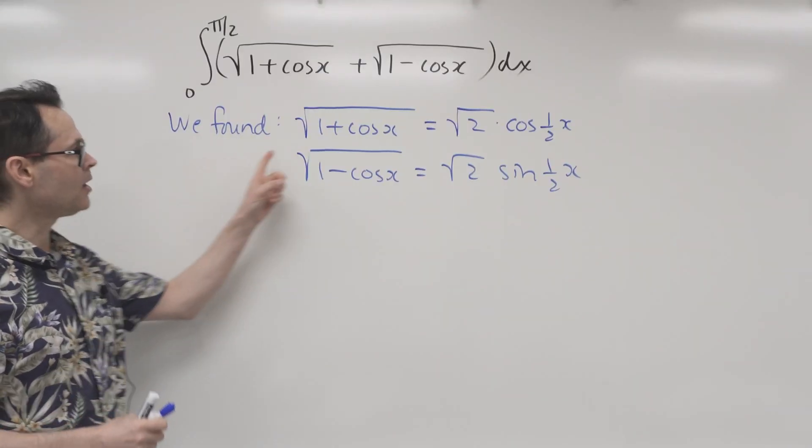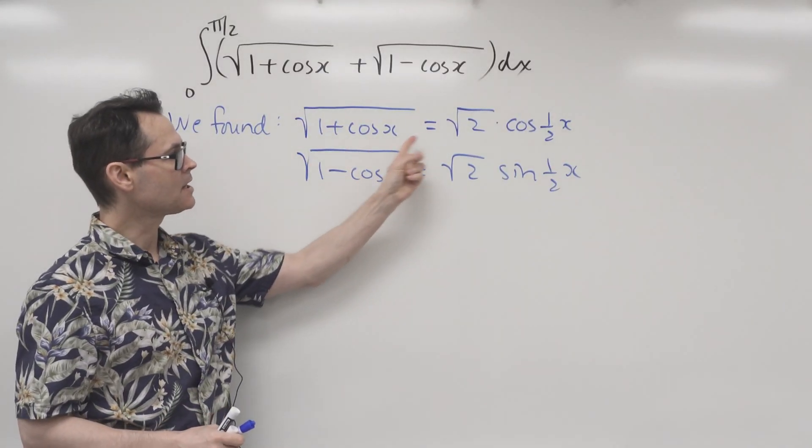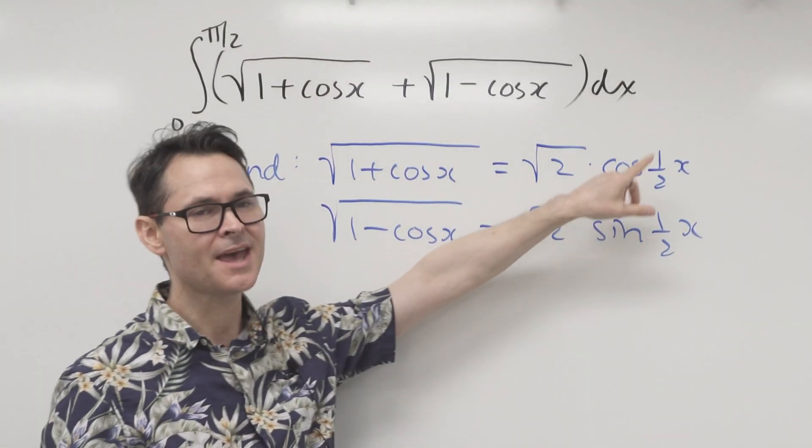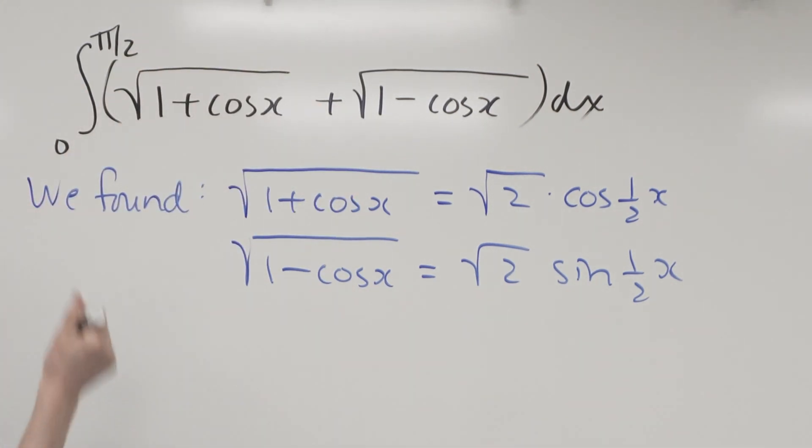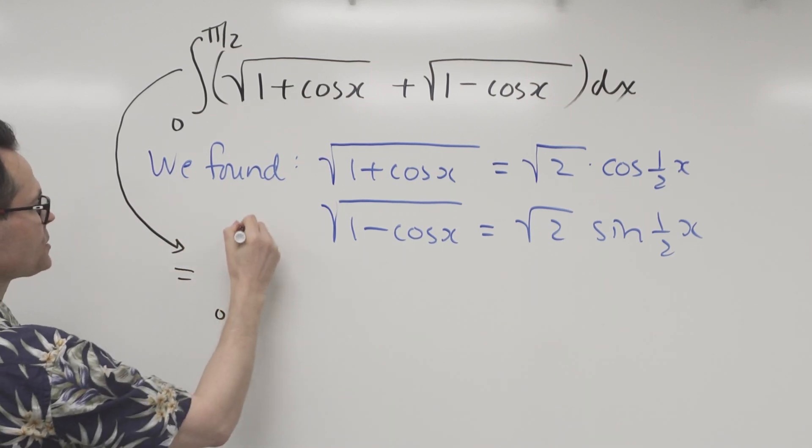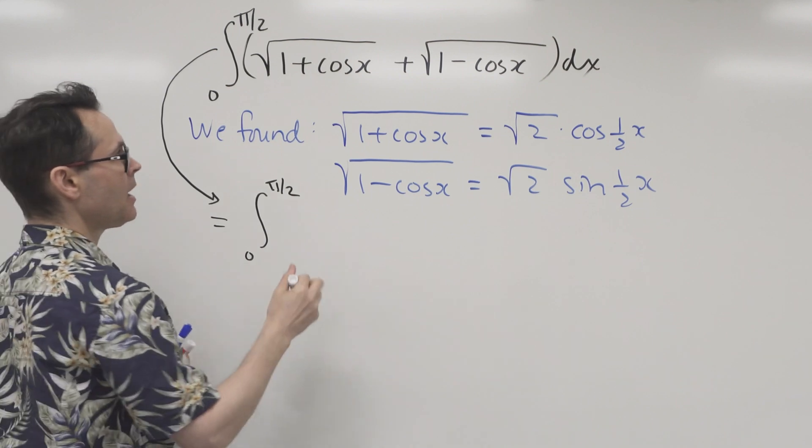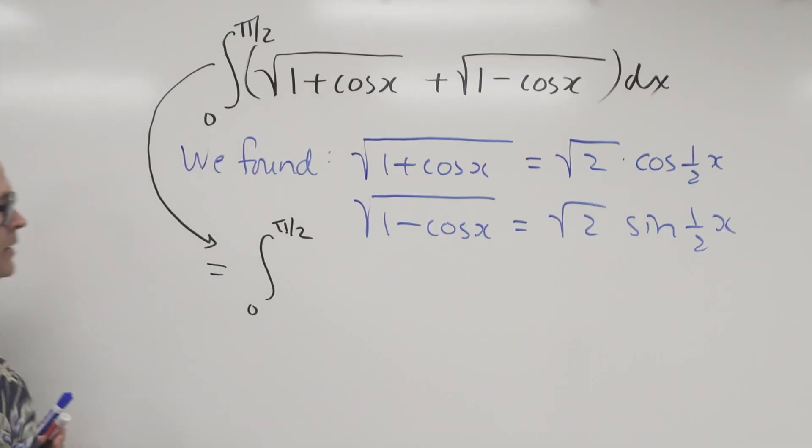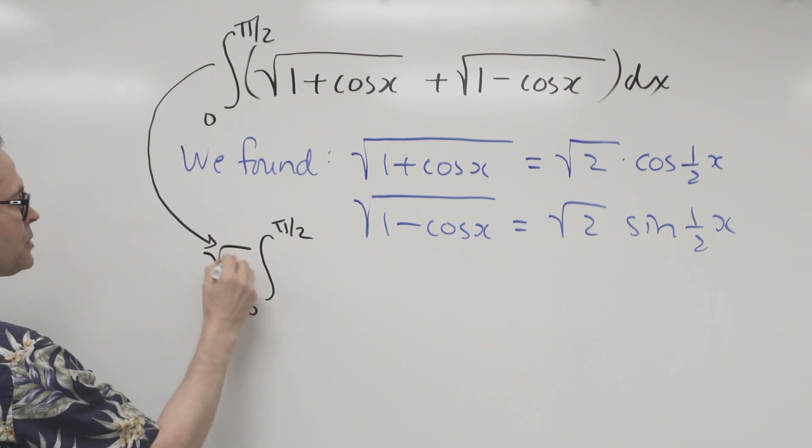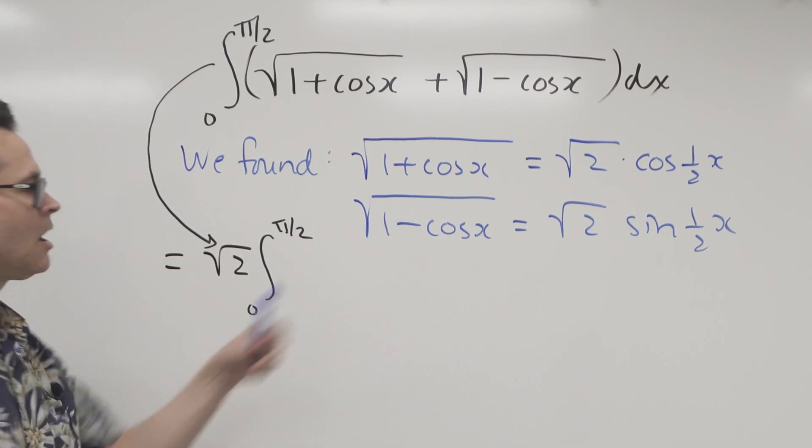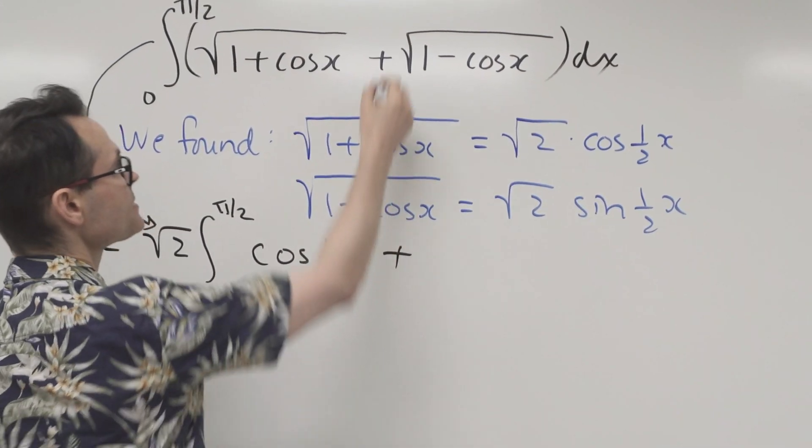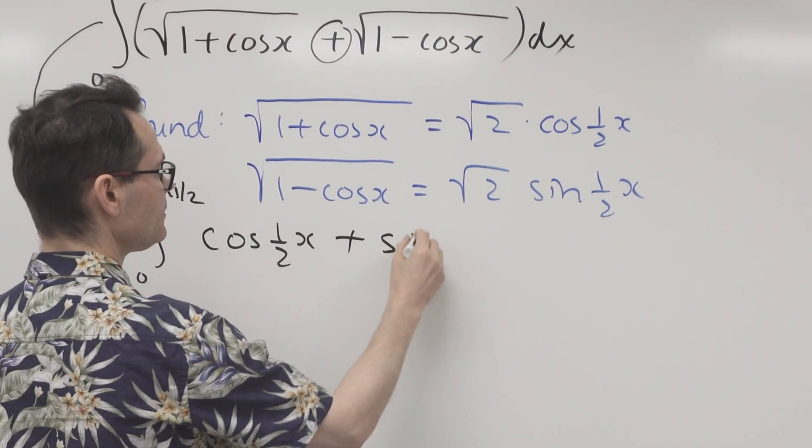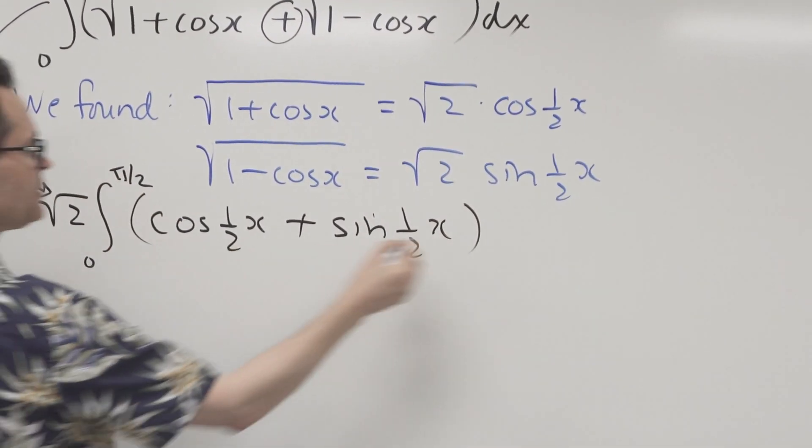Okay, so what we found was that the square root of 1 plus cos x can be substituted for root 2 cos half x. And the same for this one here. So what I'm going to do is I'm going to rewrite the original integral as the limits don't change. So from 0 to pi over 2. And I'm going to get, now notice both of them have a root 2 in it. So what I'm going to do is I'm going to put a root 2 out front, because it's a common factor. And I'm going to write that as cosine half angle plus sine half angle. Don't forget your dx.